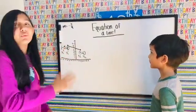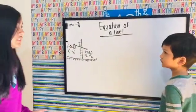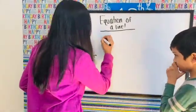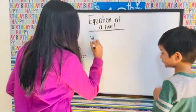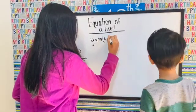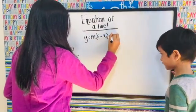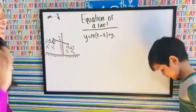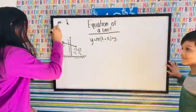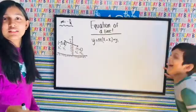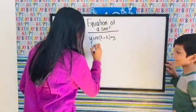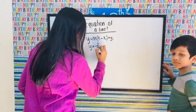Today we're solving for the equation of a line. First we write the equation: y equals m times (x minus x1) plus y1. From the last video, we knew the slope was negative two over nine, so y equals negative two over nine...